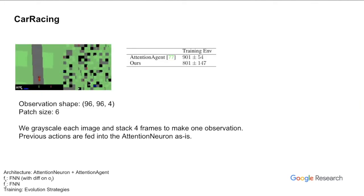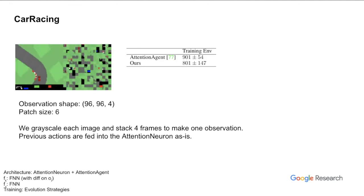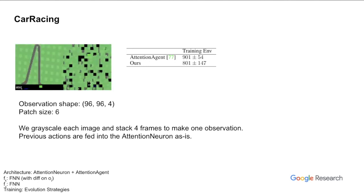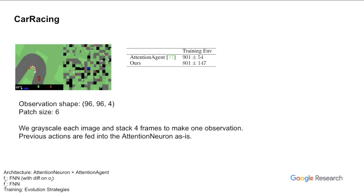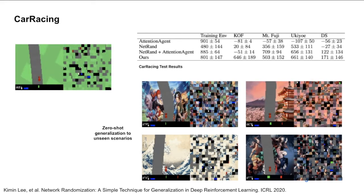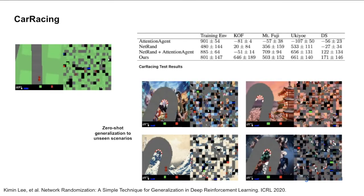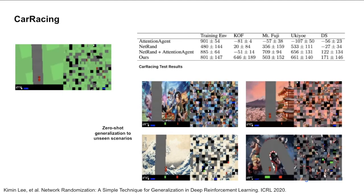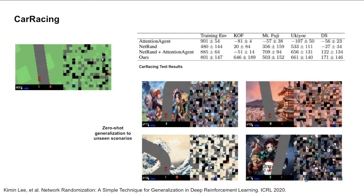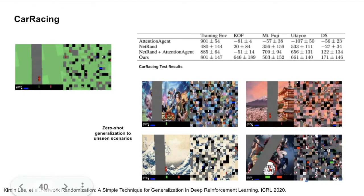In our previous work, we proposed the attention agent, which achieved state-of-the-art in car racing and demonstrated strong generalization. We use it as both the downstream policy network and as a baseline. Though with slightly lower scores, our agent can drive well even with scrambled screens. Our agent also exhibited strong generalization capability — in four modified environments, it did not suffer significant performance loss in most cases. We also trained a combination of NetRand and Attention Agent for comparison; NetRand is specifically designed for better generalization and its performance is similar to ours, though we did not explicitly design any mechanism for zero-shot transfer — this is an interesting by-product.